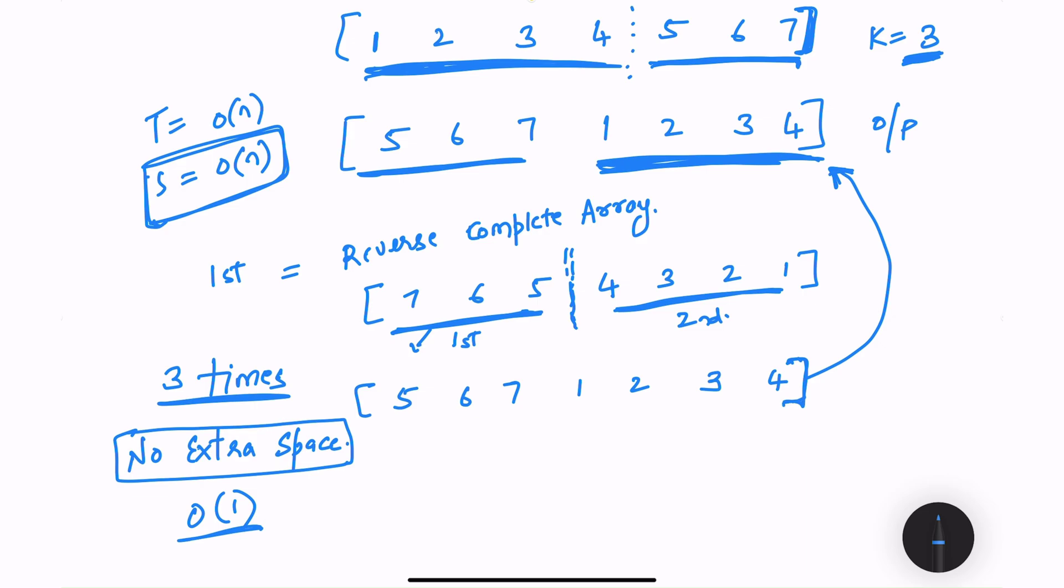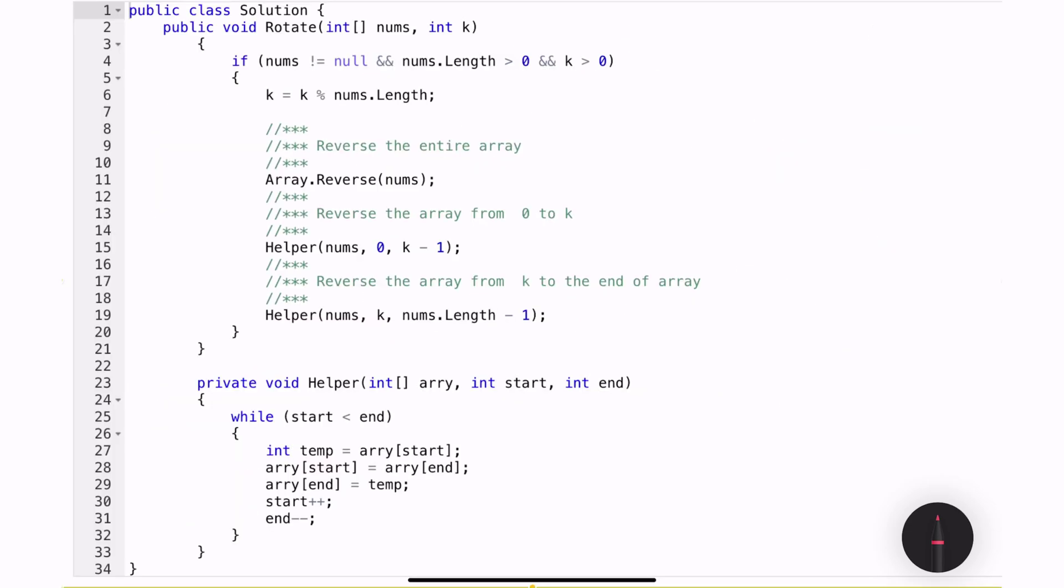Let me show you how the same solution can be implemented using C sharp. This is my C sharp solution. In the main method, I start with having some validations to check if my nums is not null, the length is greater than zero and also the value of k is greater than zero. If value of k is zero, it means we are not actually moving any of the elements to the right. Hence we don't need to do any changes.